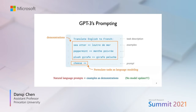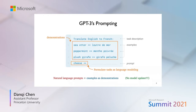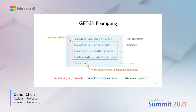The GPT-3 model has brought us a new paradigm shift, in which we can use prompts to query very large language models to solve NLP tasks. That means we can put some natural language task descriptions together with a few examples as an input query, and then ask a very large language model like GPT-3 to output the answer.